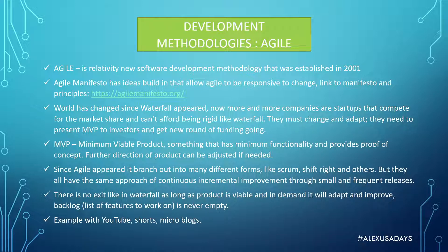Agile also came with the concept of MVP, which stands for Minimum Viable Product. That means the team can deliver something with minimum functionality that just provides proof of concept — that the program actually works — and then the direction of the product can be adjusted if needed. Once the MVP is out, a startup can get more money from investors, or they can see how it responds with customers or stakeholders and determine if any changes are needed.